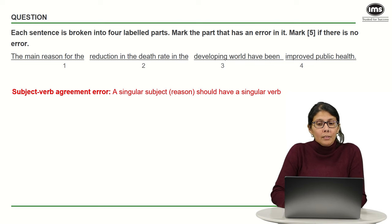So what should the correct verb be? It should be has been. The main reason has been improved public health. It's not a very difficult error to catch, but it's easy to miss if you are not able to distinguish the subject and the verb. So the error lies in part number three.